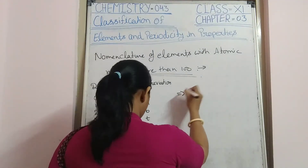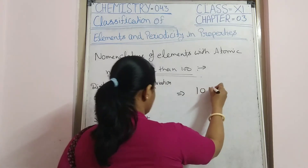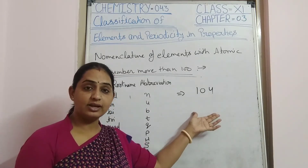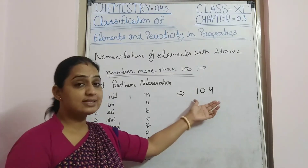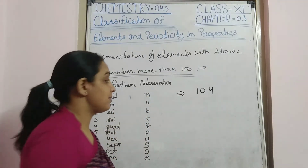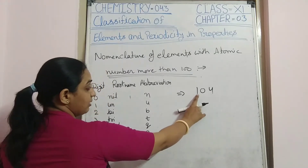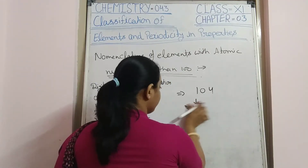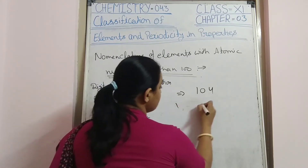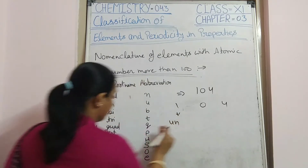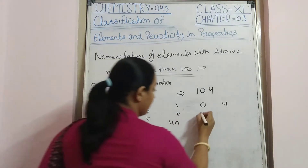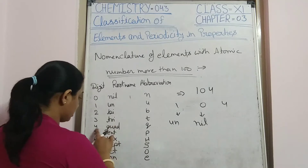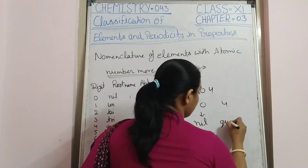For example, if the atomic number is 104 — an element that has not yet been discovered or named — we can name it systematically. One is 'un', zero is 'nil', four is 'quad', and we add 'ium' at the end. So the name becomes 'unnilquadium'.